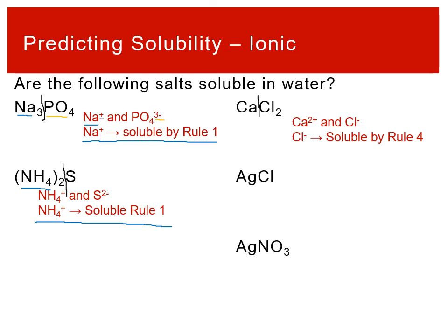For silver chloride, we have the same chloride anion — rule four — but silver is rule three, which is a more important rule. So silver chloride is insoluble. Chloride ions form relatively strong hydration interactions with water, but silver does not form strong hydration interactions, so it stays in the solid and does not dissolve out into solution. Rule three overrides rule four here.